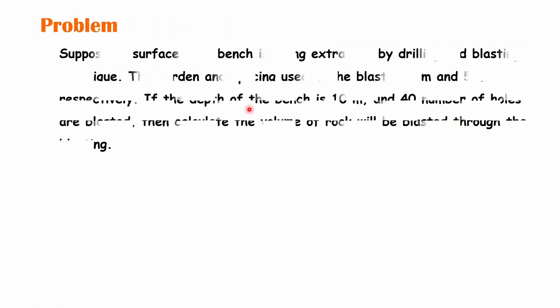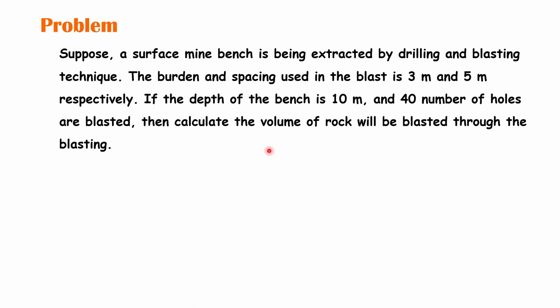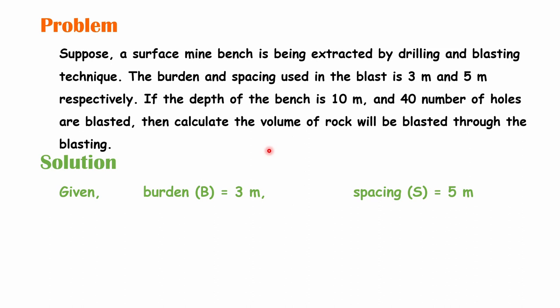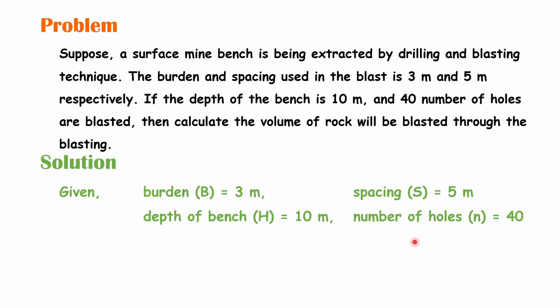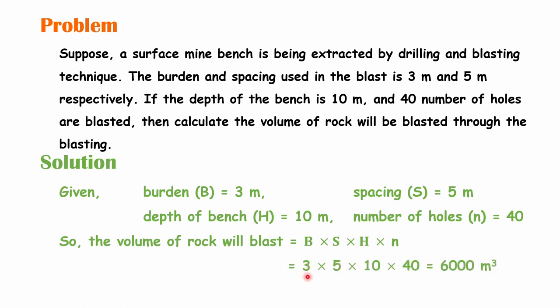Let's see one problem. Suppose a surface mine bench is being extracted by drilling and blasting technique. The burden and spacing used in the blast are 3 meters and 5 meters respectively. If the depth of the bench is 10 meters and 14 holes are blasted, then calculate the volume of rock blasted. The volume of rock equals burden × spacing × depth × number of blast holes: 3 × 5 × 10 × 14, giving a volume of 6000 cubic meters.